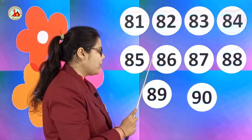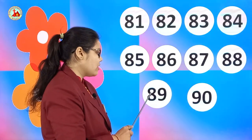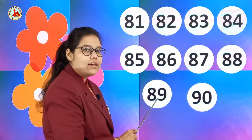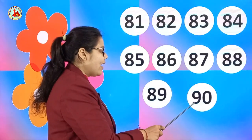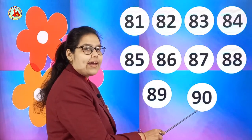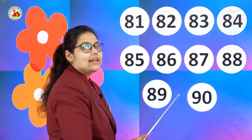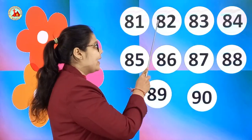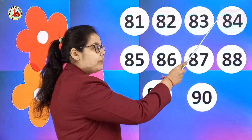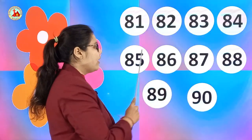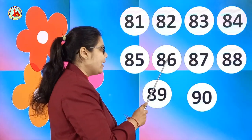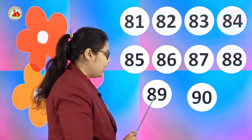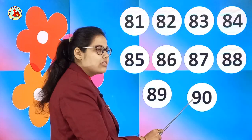After 88, which number will come? 89, 89. 89, 89. 90, 90. 90, 90. Let's say one more time: 81, 82, 83, 84, 85, 86, 87, 88, 89, 90.